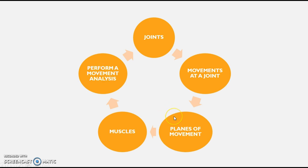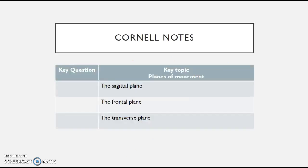Planes and movements are our key focus. What they are is basically a visual representation of three-dimensional movements at a joint — and if that sounds complicated, it's not meant to. Your body is split up in three ways, by three planes: the sagittal plane, the frontal plane, and the transverse plane.